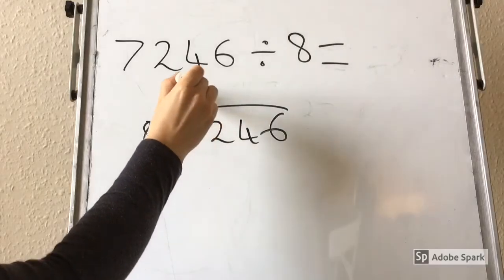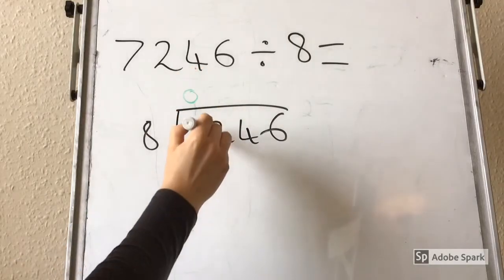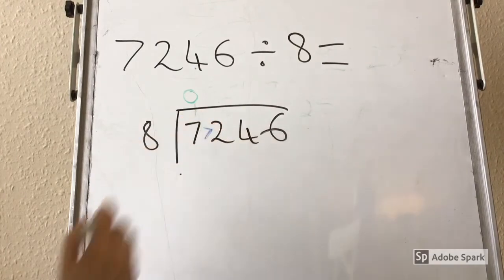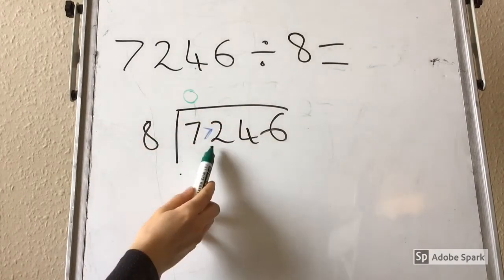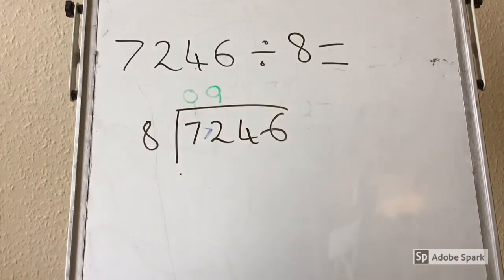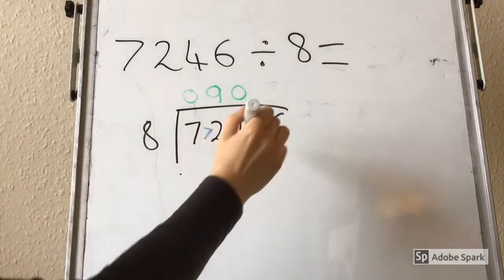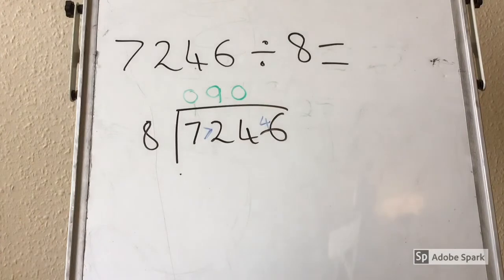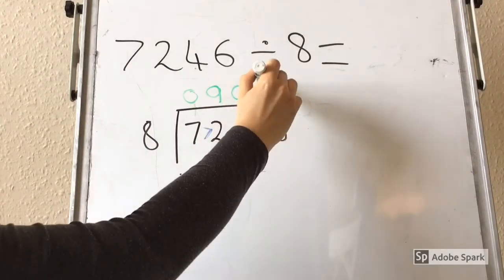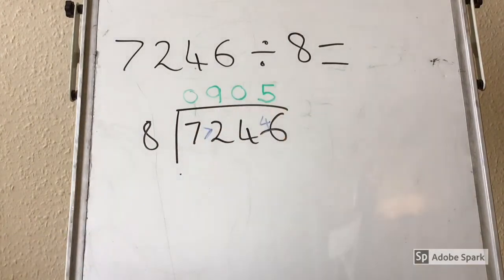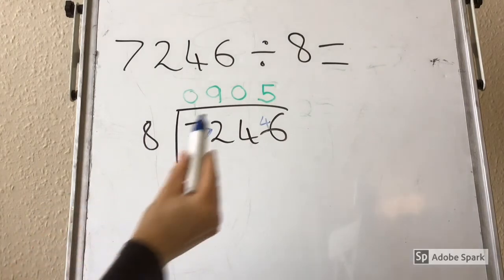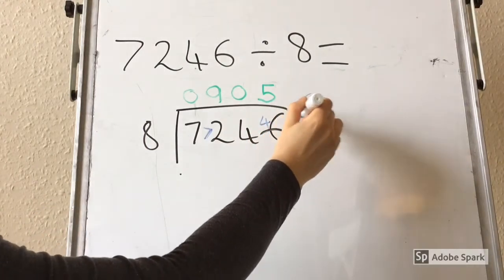8 doesn't go into 7, so I am going to put a 0 up here and carry across the 7. 8 goes into 72 perfectly 9 times, because 9 times 8 is 72. 8 doesn't go into 4, so I need to put another 0 at the top and carry the 4 across. 8 goes into 46 five times, because 8 goes into 40, so there are 6 left over. So our remainder here is 6 eighths.